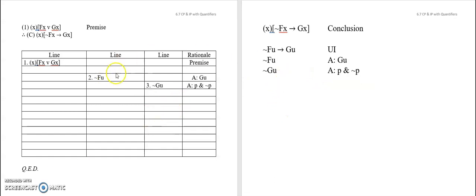Putting all of that together, we're going to assume not FU — that's an assumption — and we are looking for GU. We assume FU, and we're looking for GU. But let's suppose we were still stuck and didn't know how to get the conclusion. We could consider nesting another assumption — this time an IP assumption, an indirect proof assumption. Since we're looking for GU, we assume the negation: not GU. That's an assumption, and we're looking for a contradiction. With that start, pause and see if you can finish it correctly.